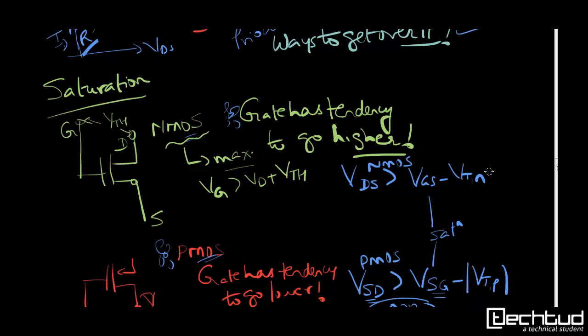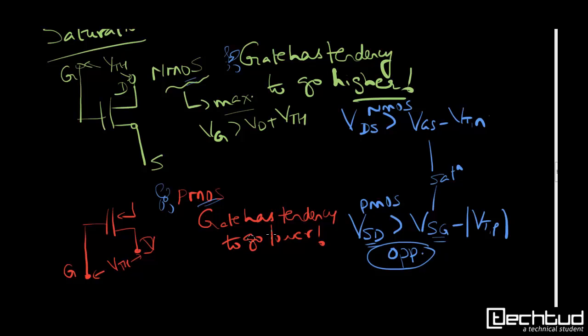Similarly for PMOS, the gate has a tendency to go lower potential compared to drain by threshold amount. So in this way you can remember whether my transistor is in saturation or not.